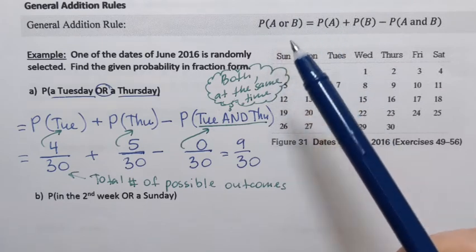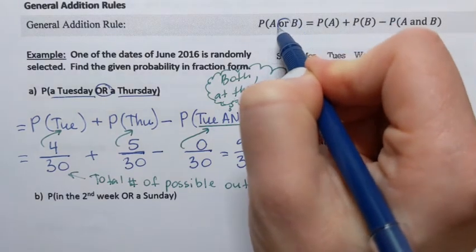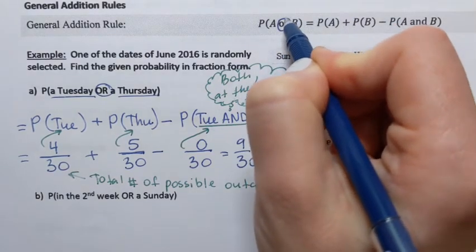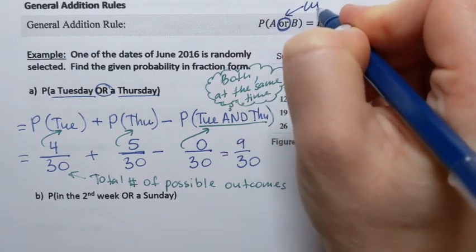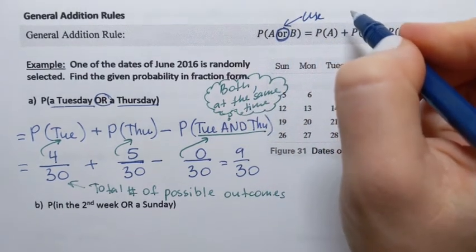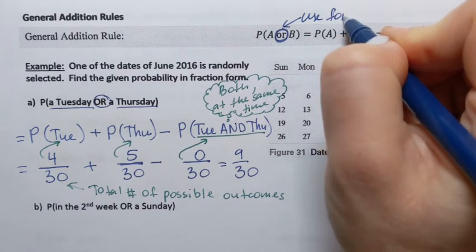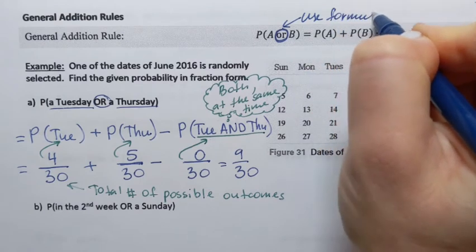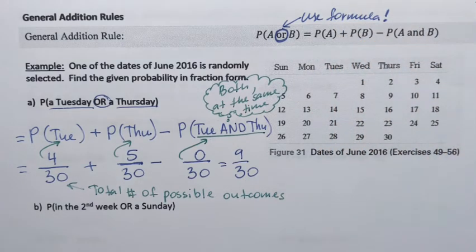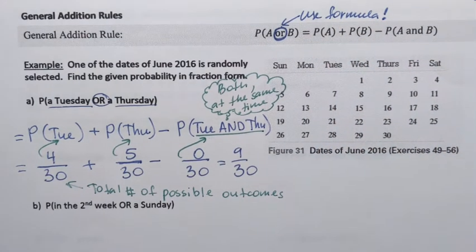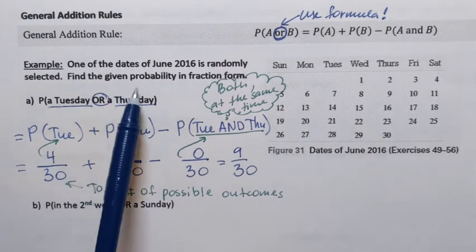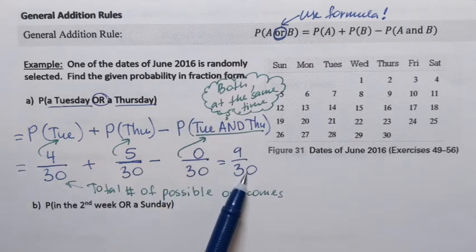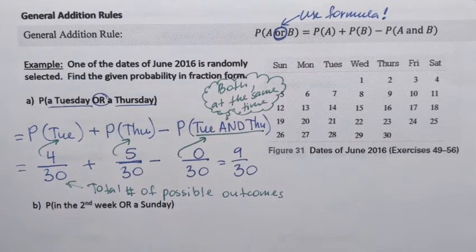When you see the word OR, that's your indication to use the formula. So 9 over 30 is the probability, and since we need the answer in fraction form, we'll leave it like that. Now let's try part B.